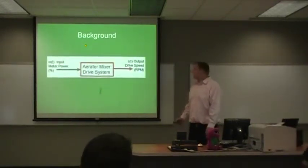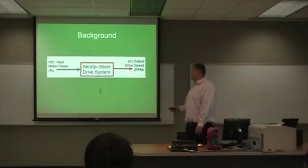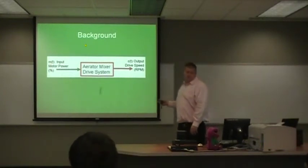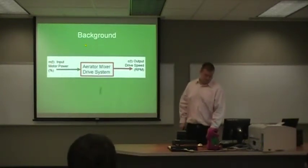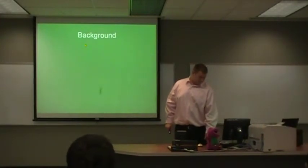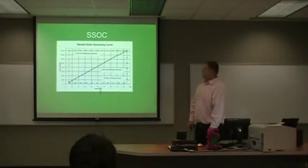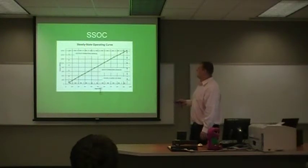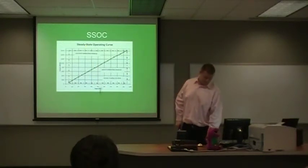Here's our basic block diagram. It's an input percentage that we want to put into the system. It gives out the drive speed of the mixer, which is in revolutions per minute. This is our steady-state operating curve. It is linear over the entire operating range from 5 to 95 percent output. This is our system right around here, up to about 1600. It has a slope of 17.5 RPM per percent.